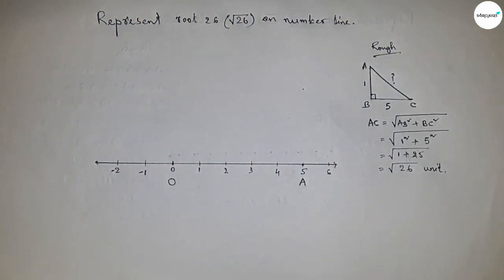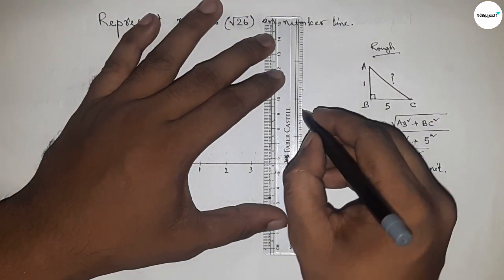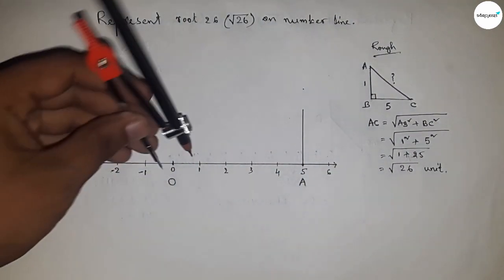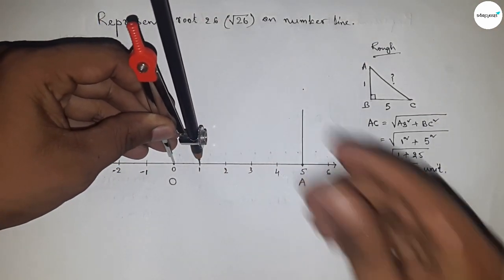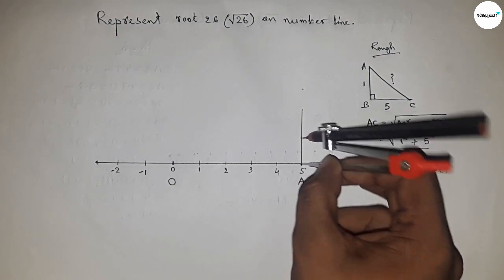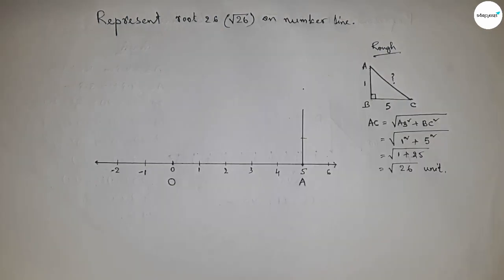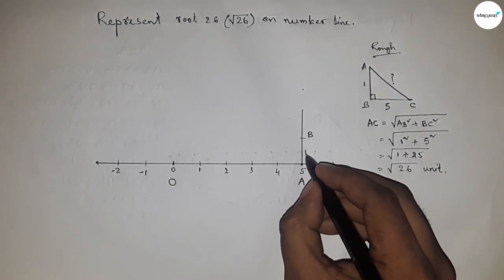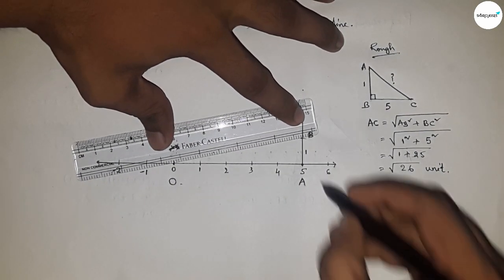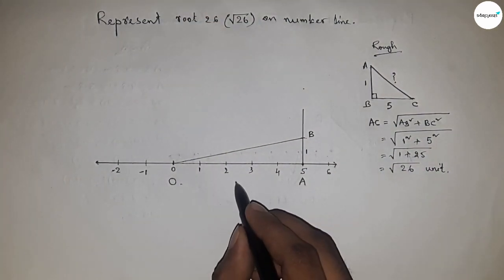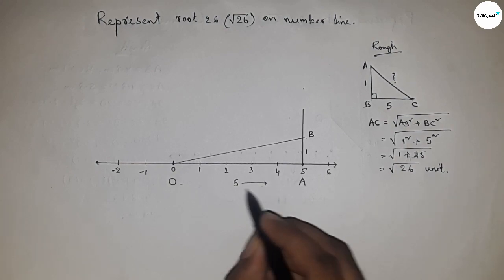Next, take the length between any two numbers and mark it here. This is point B, and this is 1 unit. Now join O and B. The distance between 0 to 5 is 5 units, and the vertical distance is 1 unit.